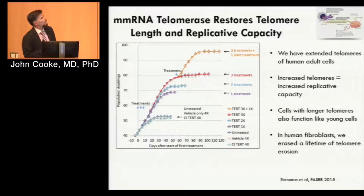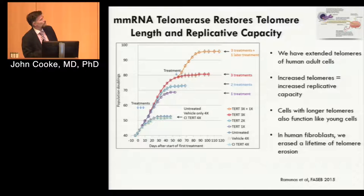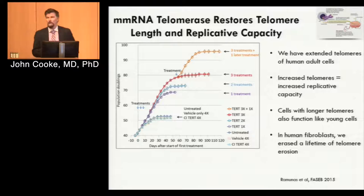These aren't endothelial cells — these are human fibroblasts. What I'm showing you is population doublings over time as the fibroblasts approach the Hayflick limit, which for human fibroblasts is about 50 population doublings. With one, two, or three treatments, you can see a significant boost in replicative capacity. Even after these cells plateaued again at a much higher level — 80 population doublings — we could treat them with RNA telomerase again and get further doubling. That was very exciting, unexpected, and led to intellectual property.